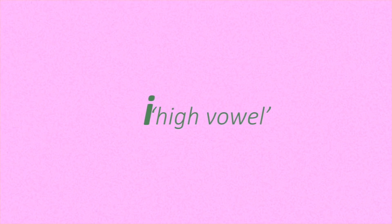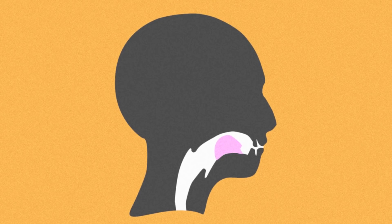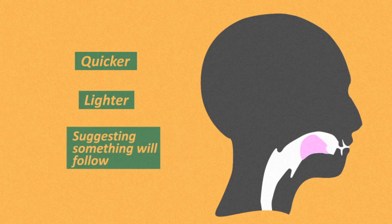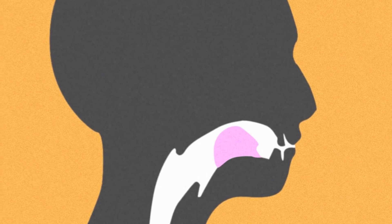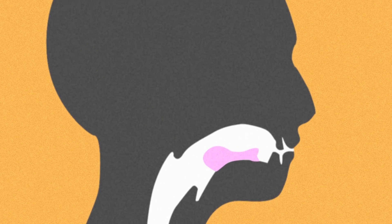Leading research suggests that the I is preferred first because it's a high vowel, meaning that the tongue is in a higher position when it's pronounced, and might be characterised as being quicker, lighter, and suggesting that something else will follow. A or O sounds are longer and lower, and possibly more conclusive.